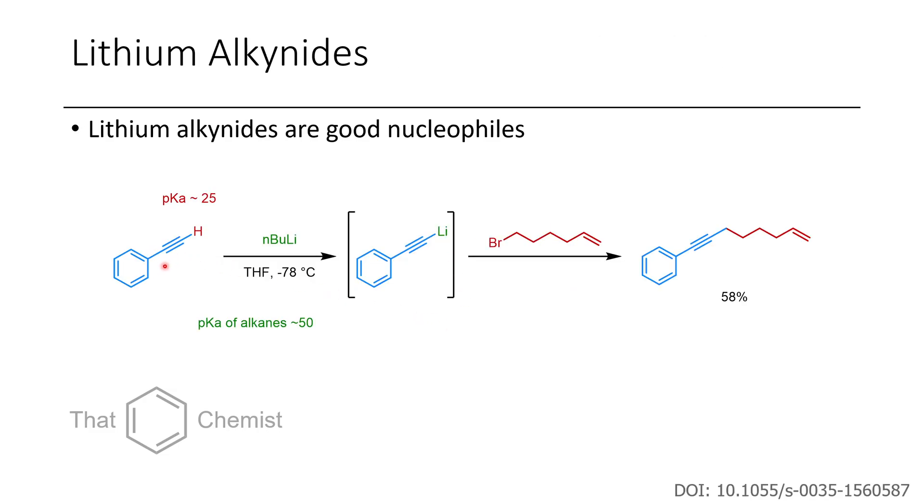Another thing you can do is take an alkyne and deprotonate it with N-butyllithium. This is one way we would prepare an alkynyl lithium in the lab. This alkynyl lithium is now a great nucleophile, so it can engage in SN2 reactions, displacing a primary bromide, for instance. Then we get this interesting enyne. It's an ene because there's an alkene, and an yne because there's an alkyne.